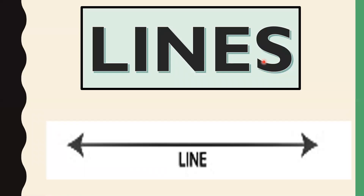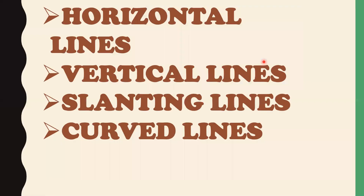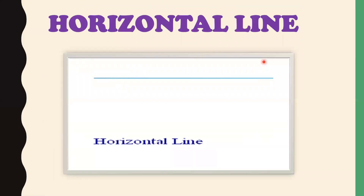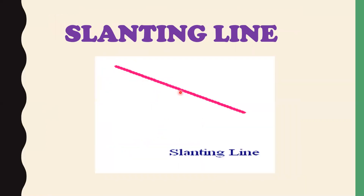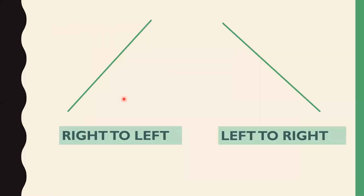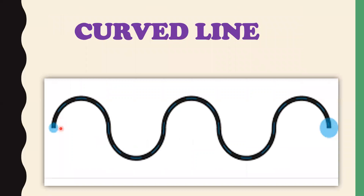There are different types of lines that we are going to learn today. The names are: horizontal lines, vertical lines, slanting lines, and curved lines. The first one is a horizontal line, also called a sleeping line. Next is a vertical line, also called a standing line. Then we have a slanting line, which can go from right to left or left to right.